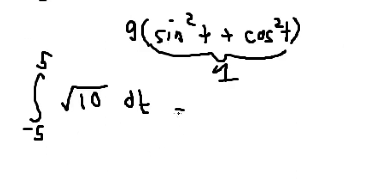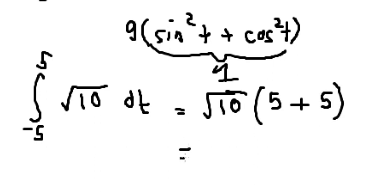Now for the final answer: five minus negative five equals ten, and we have ten times the square root of ten.